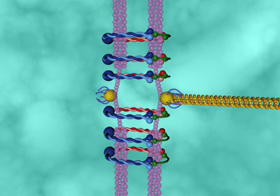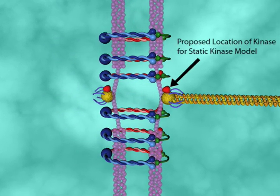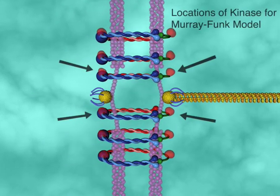Unlike other proposed models that place the kinase within the kinetochore, Murray and Funk propose that the kinase is attached to cohesin rings that hold the two chromatids together.